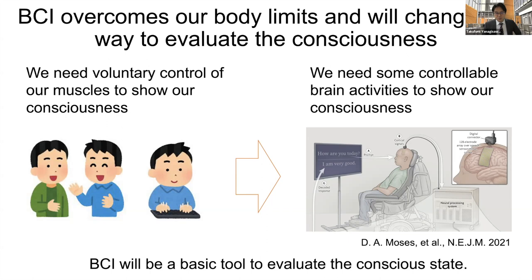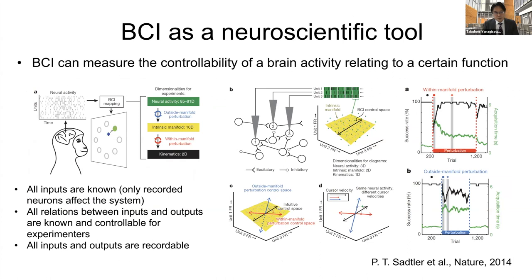BCI is also a very useful neuroscientific tool. Because BCI performance depends on how much the subject can control brain activity, BCI can measure the controllability of brain activity relating to a certain brain function. BCI can also evaluate brain activity in an artificially simplified system — we can evaluate brain activity in a very simplified condition using BCI.